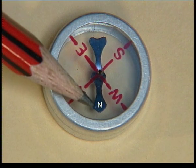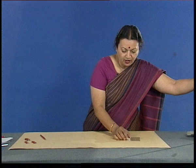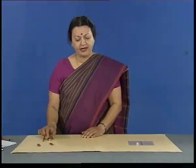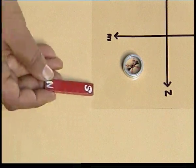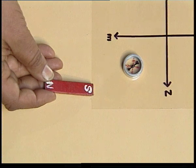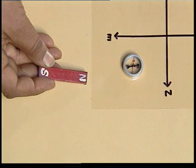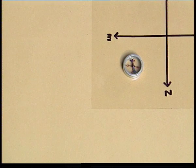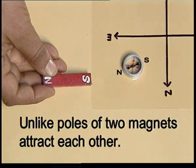The tip of the needle is the north pole and the tail the south pole. The tip of the needle points approximately in the north direction. Now what would happen if we bring a magnet close to this compass needle? The needle gets deflected. If we bring the other pole of the magnet close by, the needle gets deflected in the opposite direction. When we bring the north pole of the magnet near the tip, the tip moves away because like poles of two magnets repel each other. When we bring the south pole near the tip, the tip moves closer because unlike poles of two magnets attract each other.